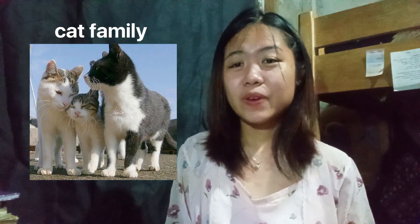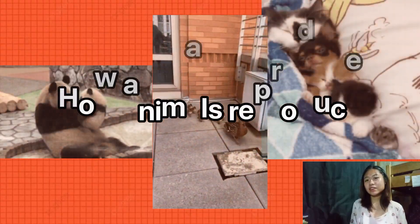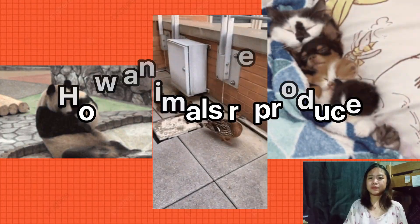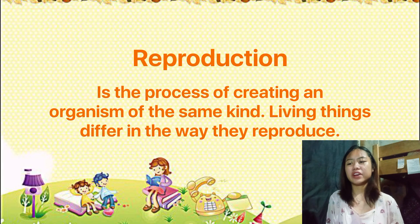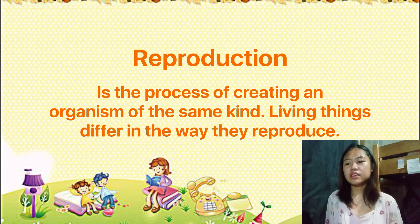We will start our discussion with how animals reproduce. From the word reproduction, let us learn what reproduction is first. Reproduction is the process of creating an organism of the same kind. Living things differ in the way they reproduce.